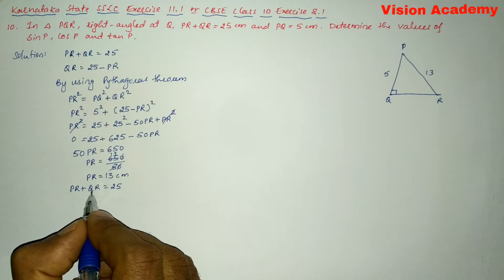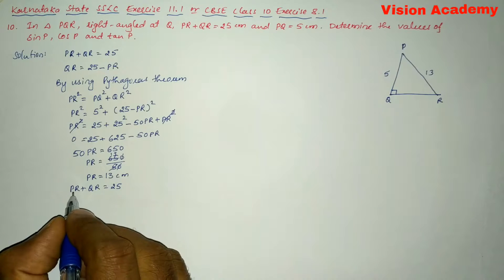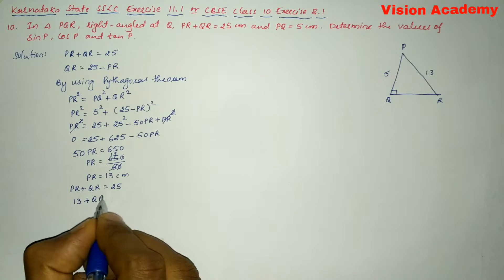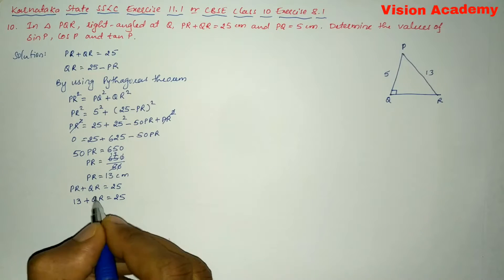So PR is 13, we will write 13 plus QR is equal to 25. Now let us transform this plus 13 from LHS to RHS.